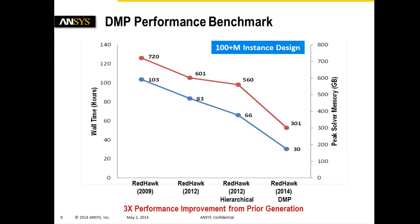As you can see from this chart, we've continually improved performance over each iteration of RedHawk. On a 100-plus million instance design, the blue line represents wall time in hours, while the red line represents peak solver memory in gigabytes. An especially significant improvement is seen from DMP.